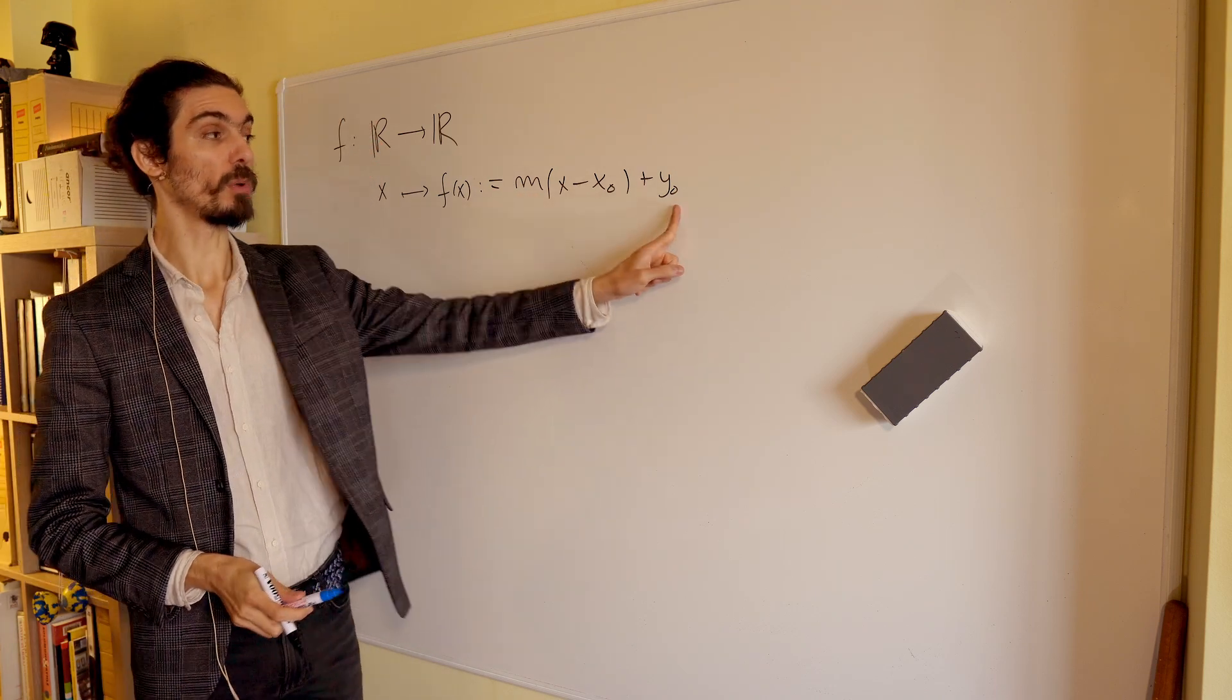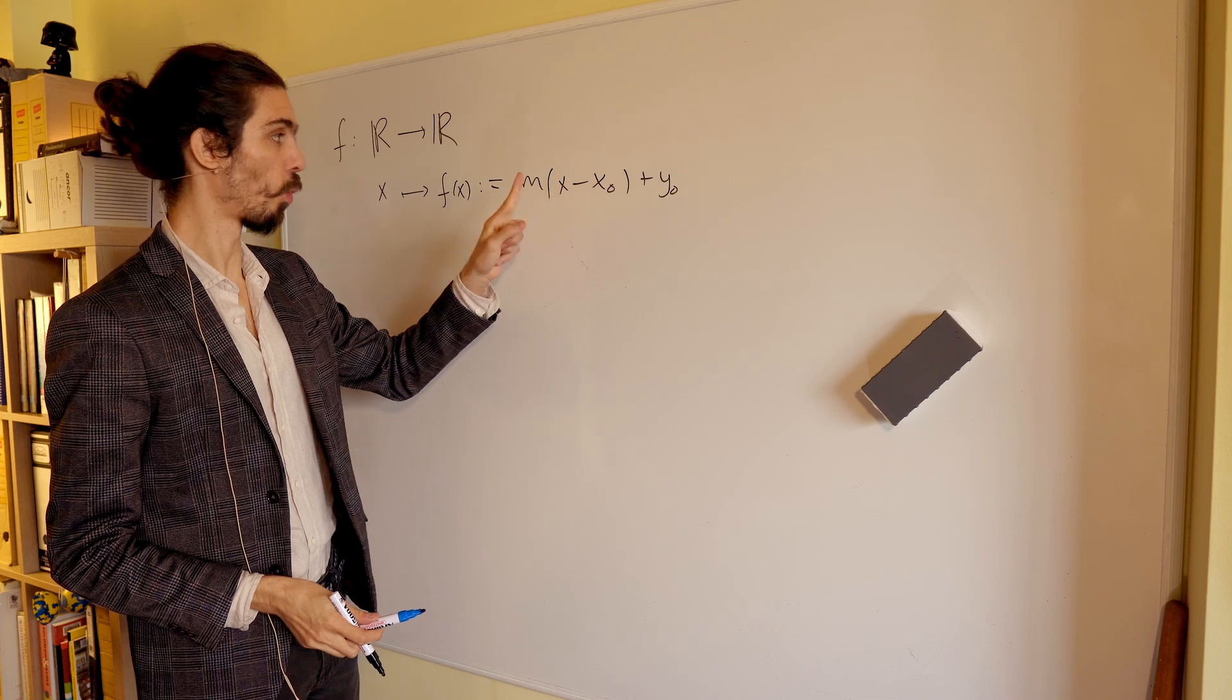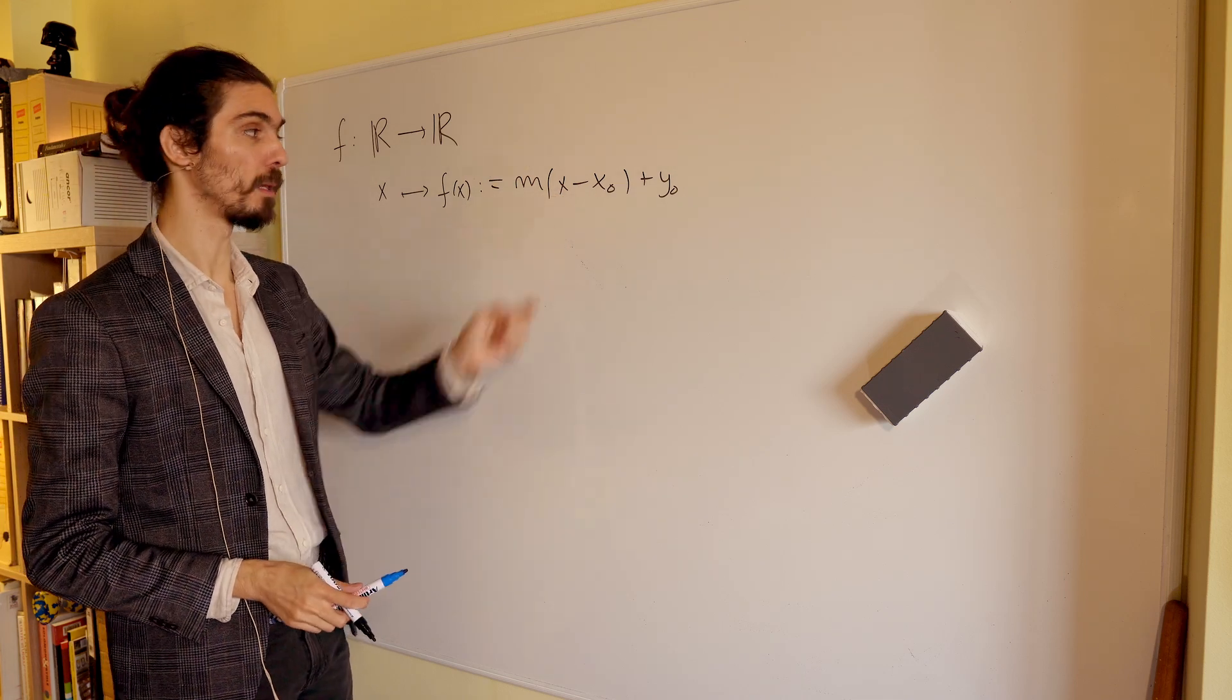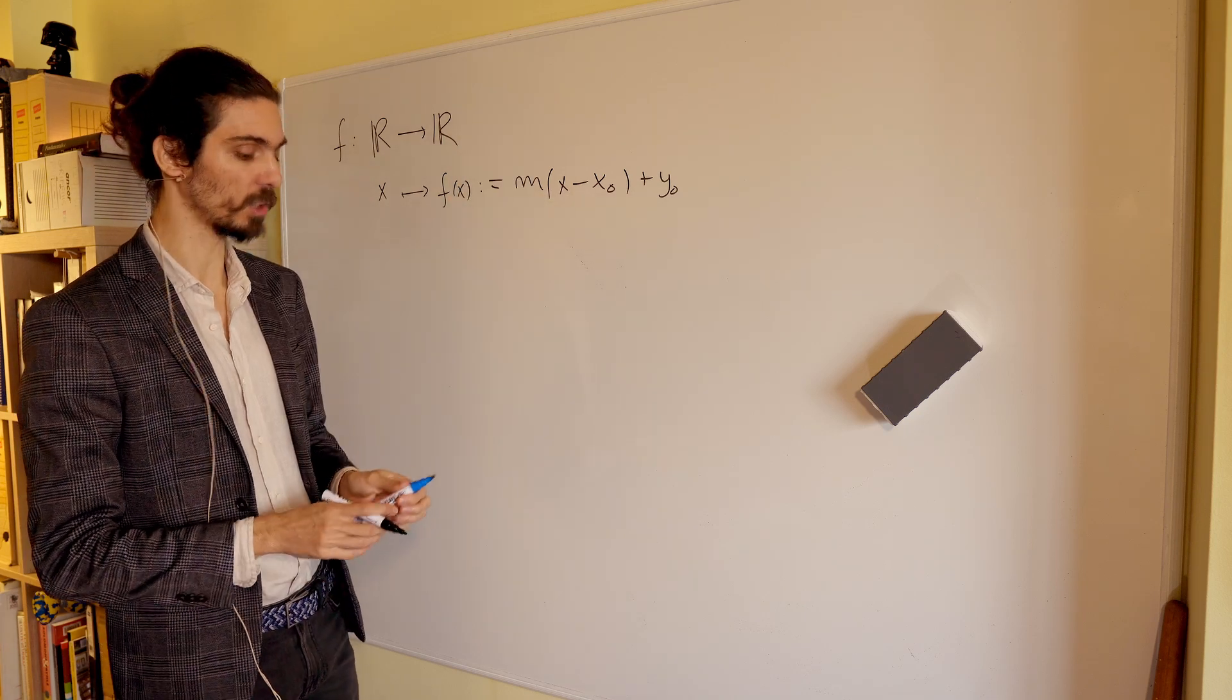m, x0, and y0 are parameters that you must specify, while x is just the input. By the structure of this thing, you can immediately recognize that this is a line in two-dimensional space.